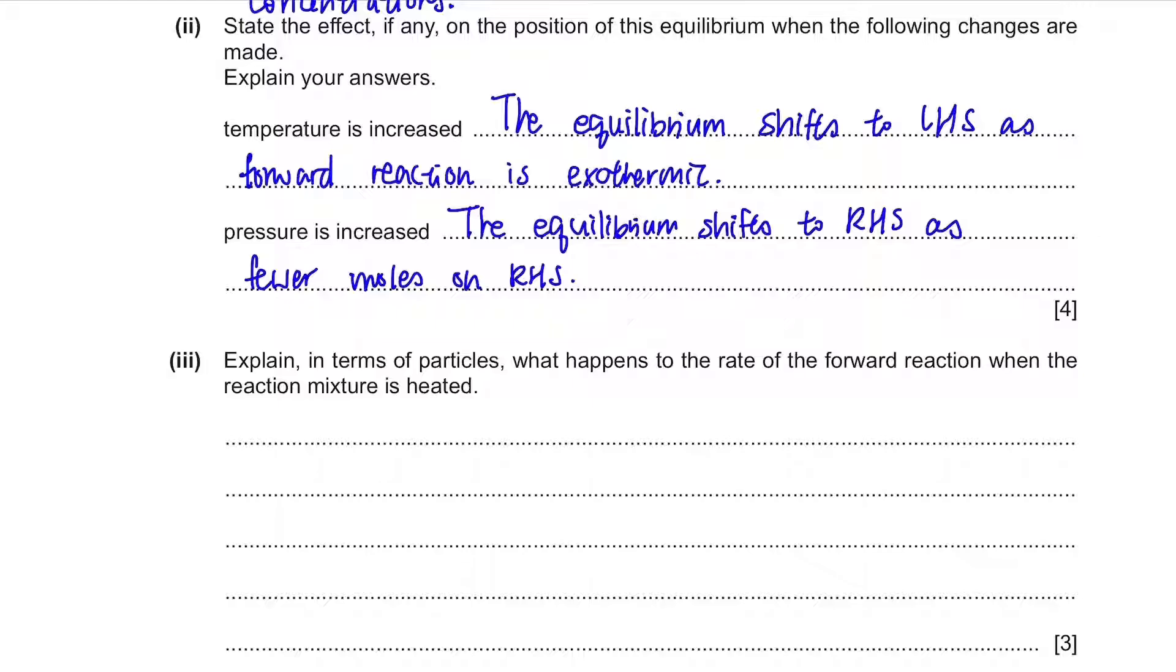Explain in terms of particles what happens to the rate of the forward reaction when the reaction mixture is heated. So now, they're not talking about the equilibrium. They're just asking about the rate of the reaction when the temperature is increased. So when the temperature is increased, the particles will have more energy and the rate will eventually increase.